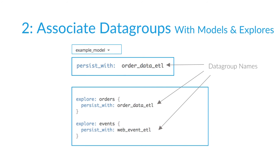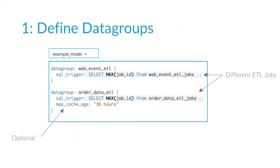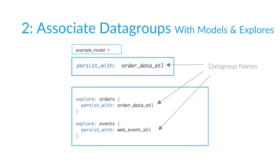The next thing you're going to do is associate data groups with models and explores. All we did in the first step was name the data groups — we haven't used them in any way yet. The parameter we use for this is 'persist with.' Persist with can be set at the model level and inherited by everything within that model, but you can also override it at the explore level. For example, at the model level I'm persisting with my order data ETL, and my orders explore inherits that. But my events explore is persisting with my web event ETL, so it will refresh when the event data comes through, not when order data does.